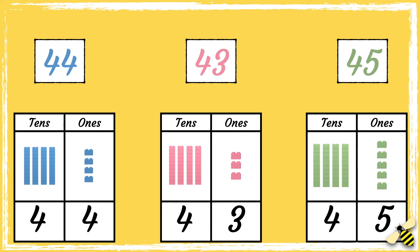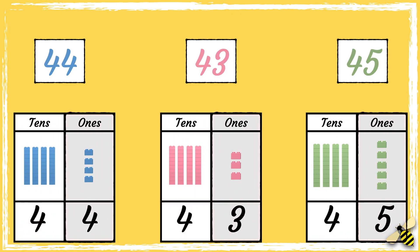Now we can compare them. Remember, when we compare numbers we look at the tens digit first. But all of these numbers have four tens, so now we can look at the ones. The group with the least amount of ones is the pink group with three ones, and the group with the most amount of ones is the green group with five ones.